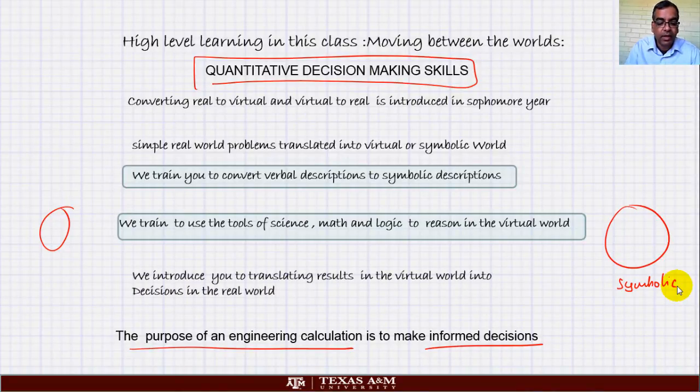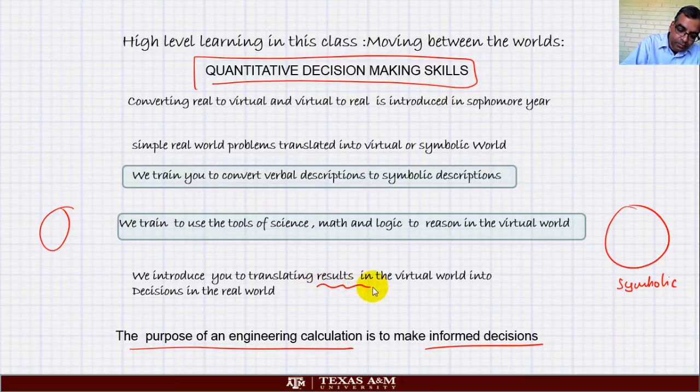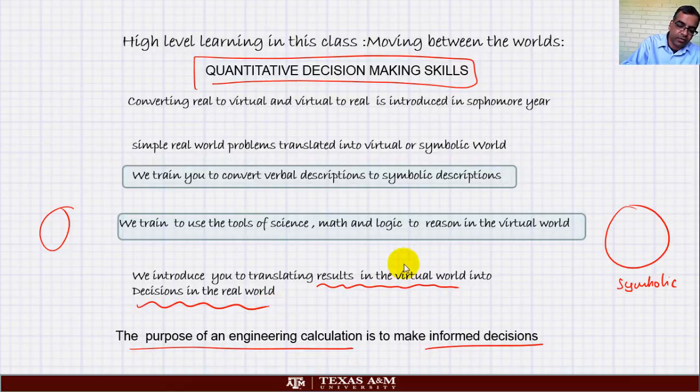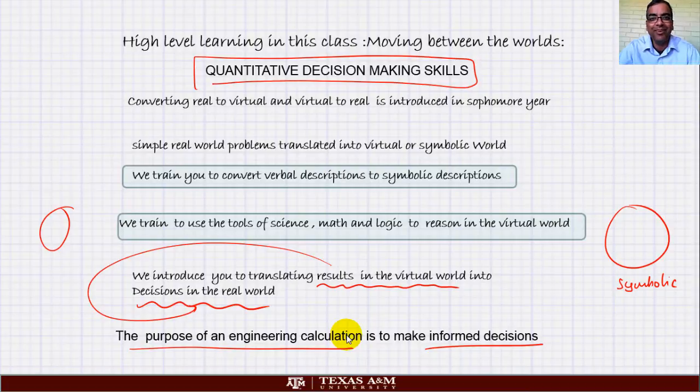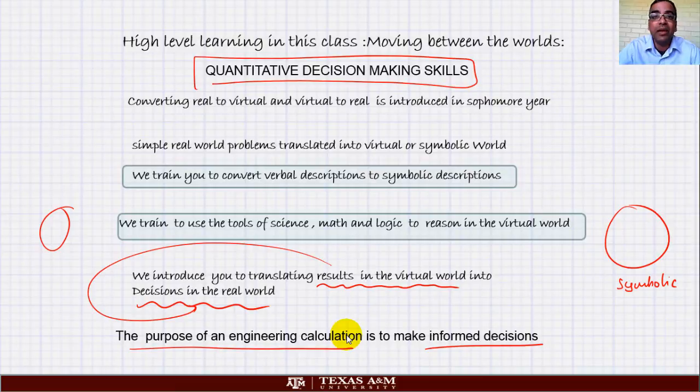Using the new tools of science, mathematics and logic to reason in the virtual world, this is what we are going to learn. And translating results in the virtual world into decisions in the real world. This connection is very important, taking results and converting into decisions because that's the purpose of calculations. I want you to understand it's not just to see whether the answer is correct in the back of the book. In reality it is to take that number and make a decision.